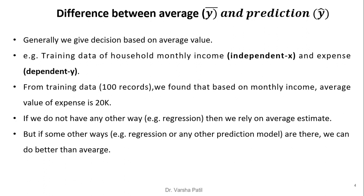From training data of 100 records, we found that based on monthly income, the average value of the expense is 20K. So from the average of the training records, if we take the average of the expense, then it is 20K. If we do not have any other way, that is regression, then we rely on the average estimate. But if some other ways like regression or any other prediction model are there, then we can do better than the average.